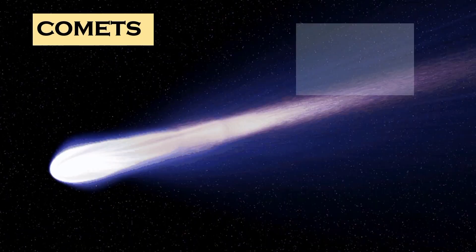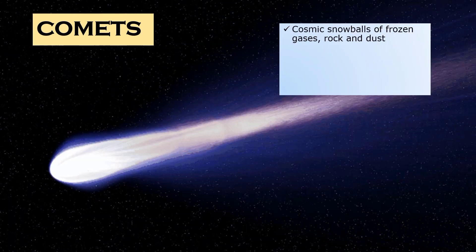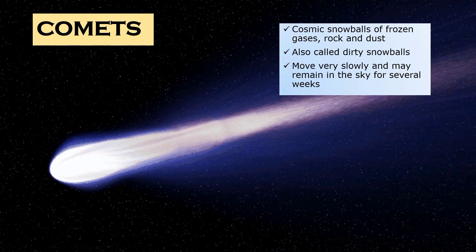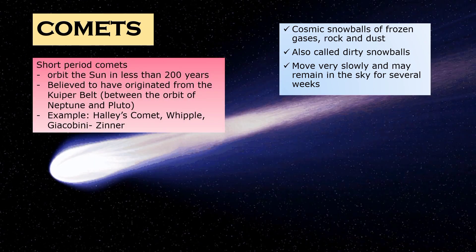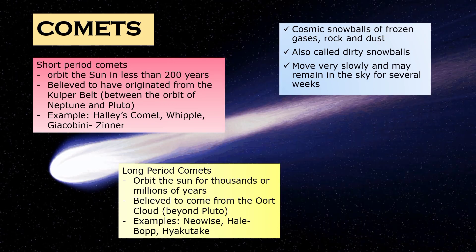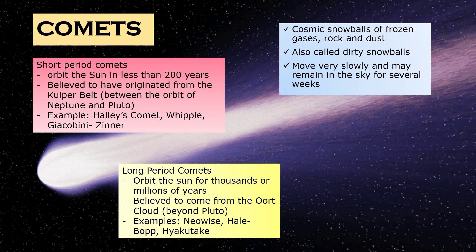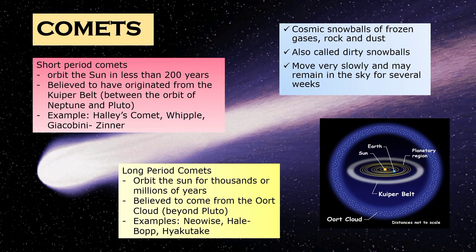Now let's discuss another type of space rock — comets. Comets are cosmic snowballs with frozen gases, rock, and dust. They are also called dirty snowballs and they may move very slowly and may remain in the sky for several weeks. We can classify comets as short period comets or long period comets. We call them short period comets if they orbit the sun in less than 200 years. They are believed to have originated from the Kuiper belt, which is found between the orbit of Neptune and Pluto. For long period comets, they orbit the sun for thousands or even millions of years. They are believed to come from the Oort cloud, which is beyond Pluto. The diagram here would tell you where you can find the Kuiper belt and the Oort cloud.